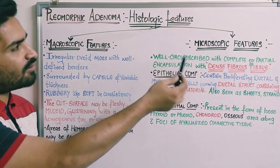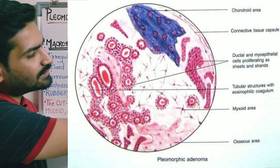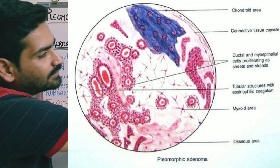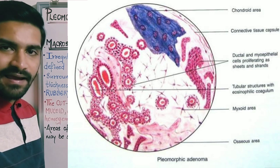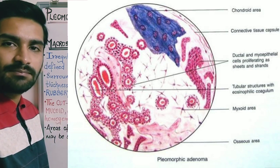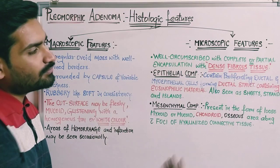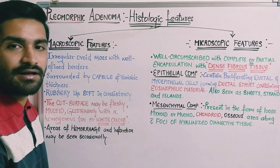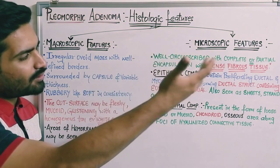Moving on to the microscopic features of pleomorphic adenoma. First, the tumor will have a well-circumscribed encapsulation, which may be complete or partial — it is not necessary that the entire tumor is covered. This capsule is made up of dense fibrous tissue.